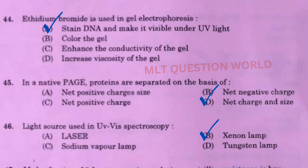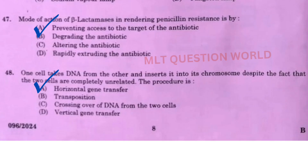Next one: Light source used in ultraviolet-visible spectroscopy — the right answer is option B, xenon lamp. Next question: Mode of action of beta-lactamases in rendering penicillin resistance is by? The right answer is option B, degrading the antibiotic. Next one: One cell takes DNA from another and inserts it into its chromosome despite the cells being completely unrelated — the procedure is option A, horizontal gene transfer.